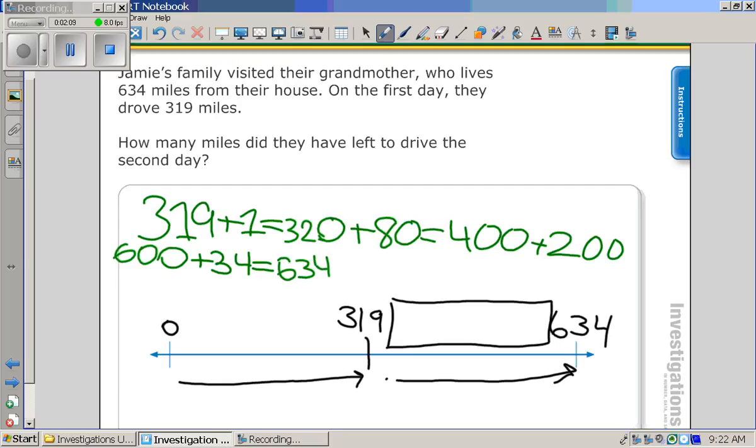Can you grab a different color and underline the numbers you added? First you added 1, then 80, then 200, then 34. So what's 200 plus 80? 280 plus 30.